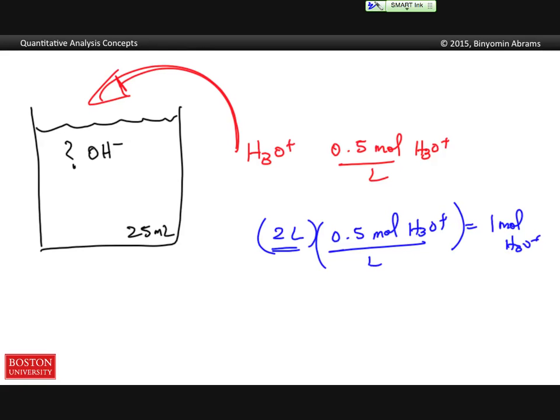And the key now is to understand the relationship between the amount of hydroxide and the amount of hydronium. So we look for the stoichiometry of the chemical reaction. In this case we've picked one that's kind of easy. It's a 1 to 1 molar ratio.